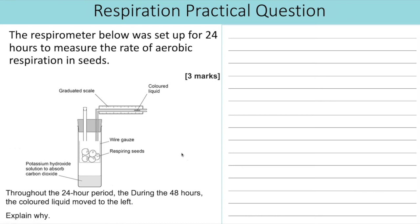We're now moving on to a practical question. And most of the practical questions for respiration do revolve around respirometers. And that links to required practical nine for AQA. So the respirometer below was set up for 24 hours to measure the rate of aerobic respiration in seeds. So the setup that we have is a sealed chamber. The seeds have been held up in this wire gauze. We just have space here for air. At the bottom, there's a liquid potassium hydroxide solution to absorb any carbon dioxide. Then we have coloured liquid in this thin capillary tube and this graduated scale, which is basically like a ruler. So we're told that throughout that 24 hour period, the coloured liquid moved to the left. Explain why.